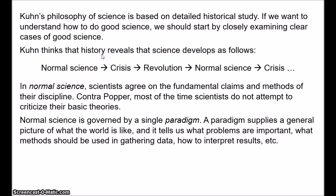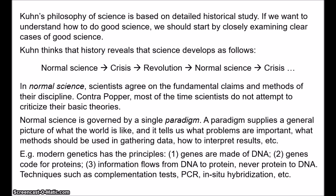Peter Godfrey-Smith gives this example for modern molecular genetics. Genetics gives us a general picture of its domain based on principles such as: first, genes are made of DNA or sometimes RNA; second, genes code for proteins and they also regulate other genes; third, information flows from DNA to protein, never from protein to DNA — this third one is known as the central dogma of molecular biology. And then we find various techniques like complementation tests, polymerase chain reaction, in situ hybridisation, and so on. All of this is part of the paradigm of modern genetics.